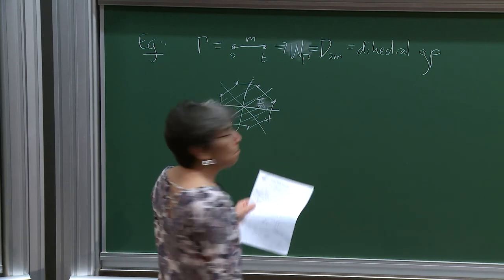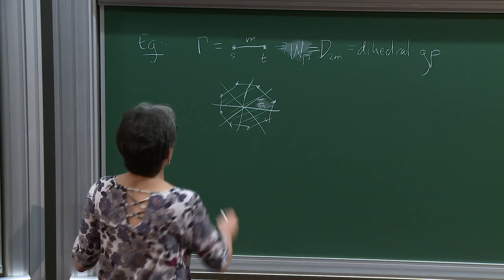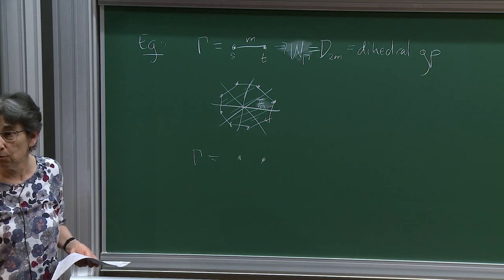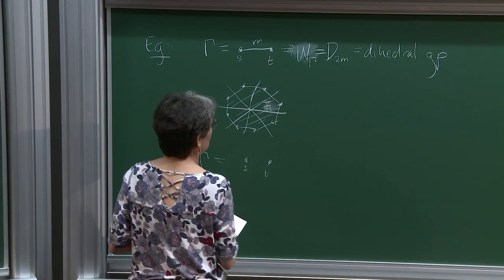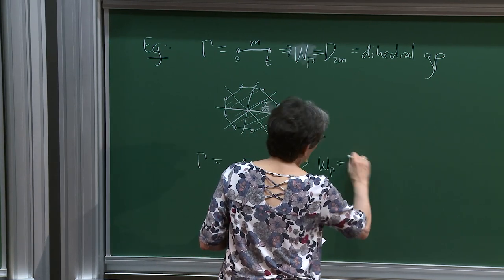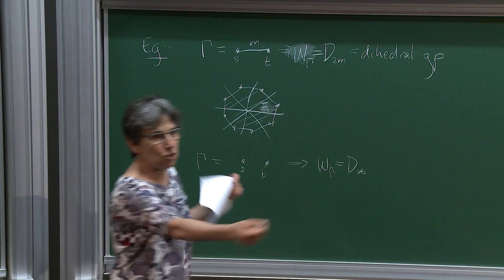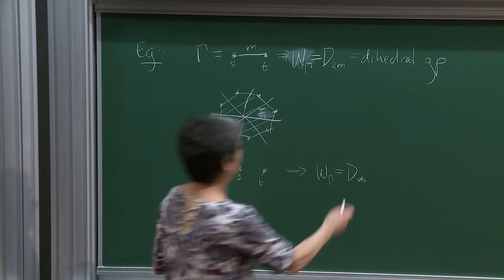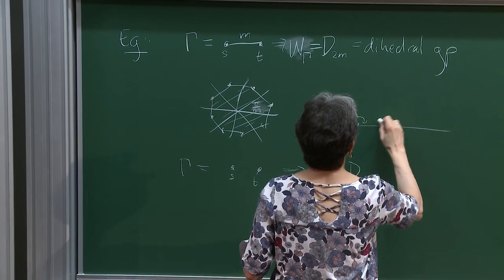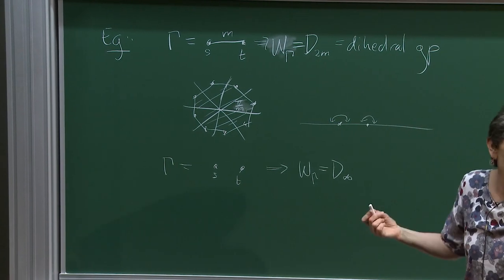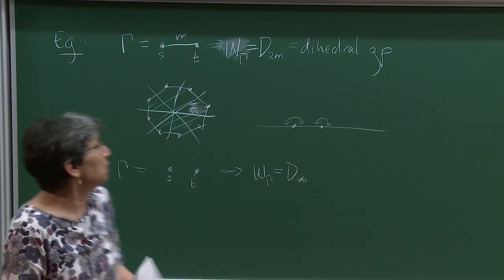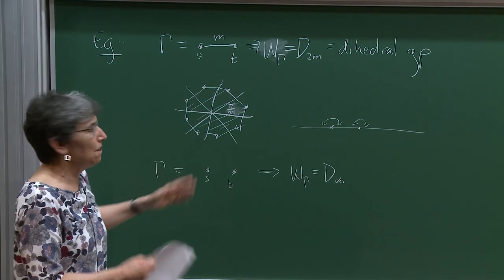That first example is a finite group. On the other hand, if we take two generators S and T with no edge, where Mij equals infinity, then W gamma is the infinite dihedral group - just the infinite dihedral group. This one is finite, this one is infinite.